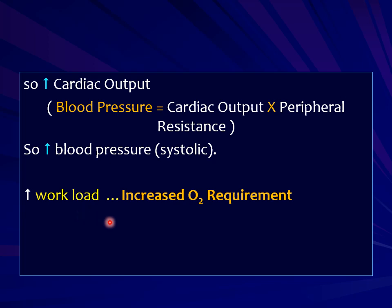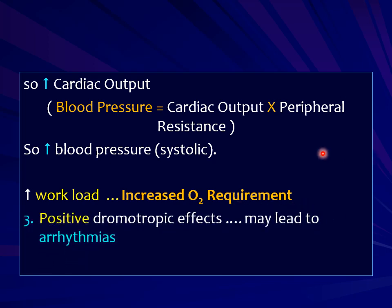Increased workload requires increased oxygen supply. This increased oxygen requirement due to increased cardiac workload is the first important effect to remember from increased cardiac stimulation. This increased oxygen requirement may produce problems in ischemic patients and may precipitate attacks of angina in such patients. The third cardiac activity is the positive dromotropic effect — increased conduction of the pulse from one place to another, from the SA node to the AV node, through the atria, and from the AV node to the ventricles. If there is increased conduction, there are chances of suffering from arrhythmias.